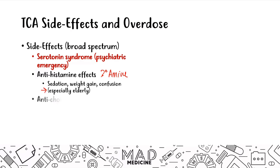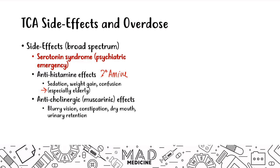You're also going to see anticholinergic — also known as antimuscarinic — effects. Patients will have classic anticholinergic signs: blurry vision, constipation, dry mouth, and urinary retention. On step one, if a patient complains of constipation, dry mouth, and urinary retention, that should clue you in strongly to tricyclic antidepressants.